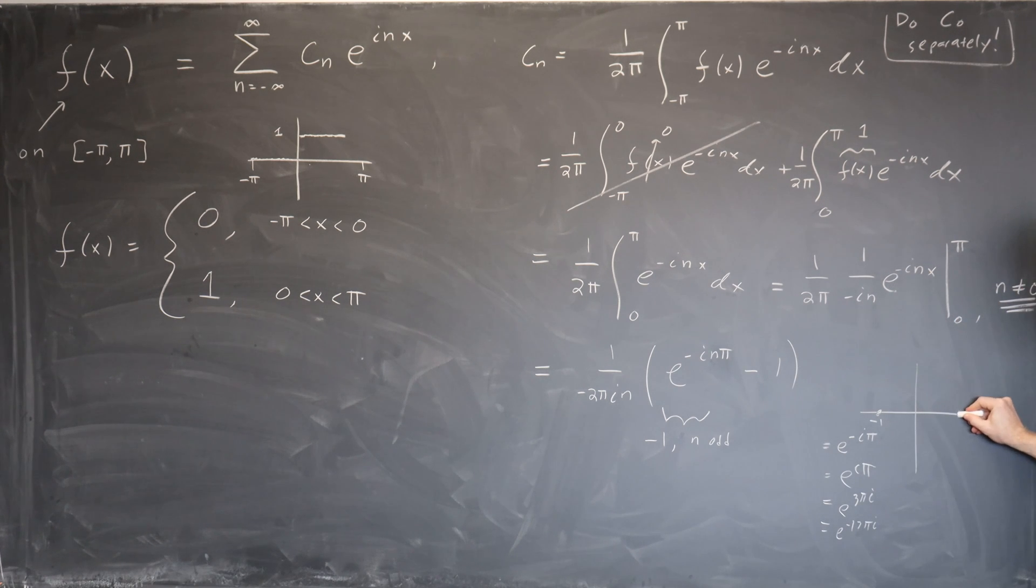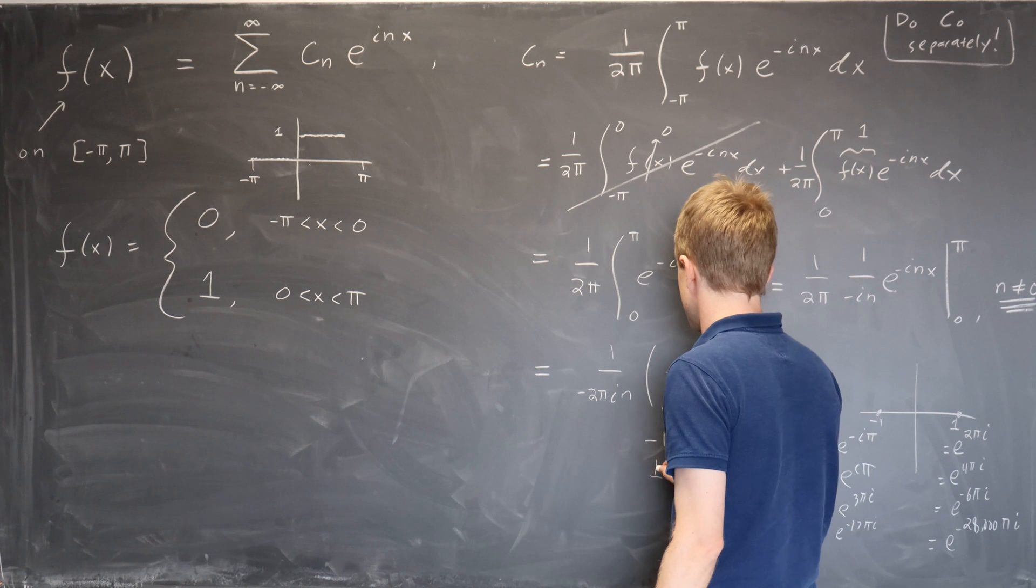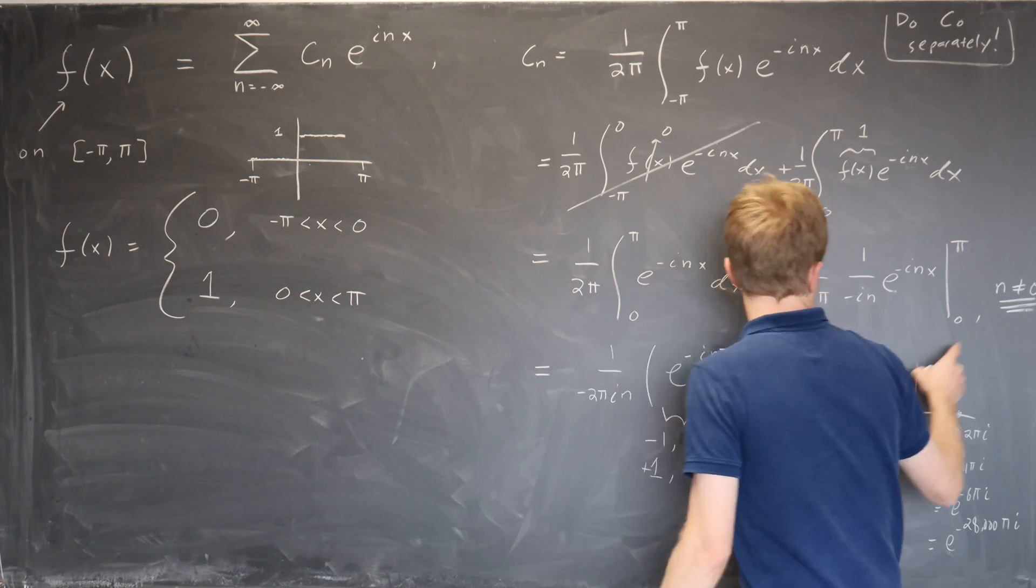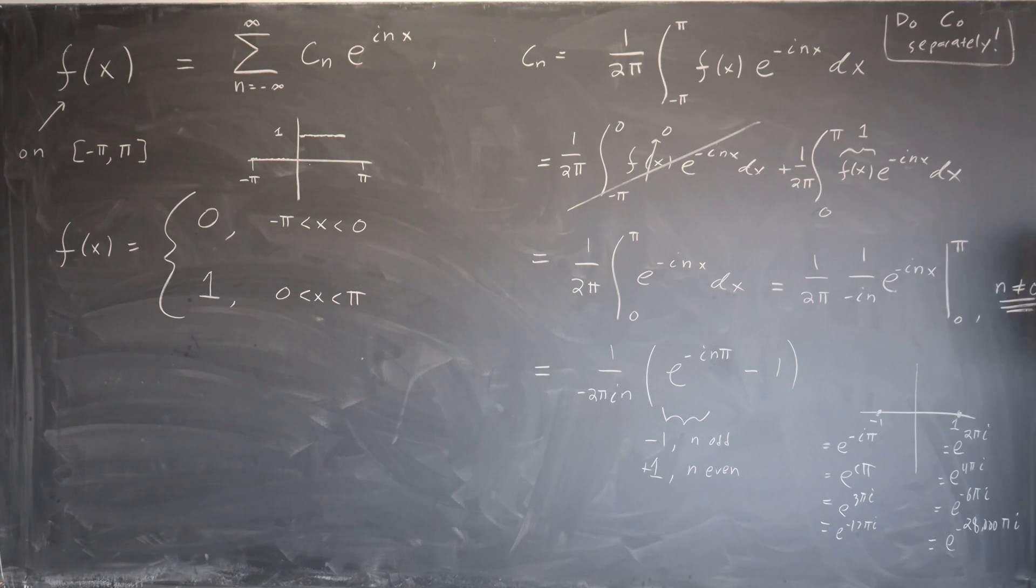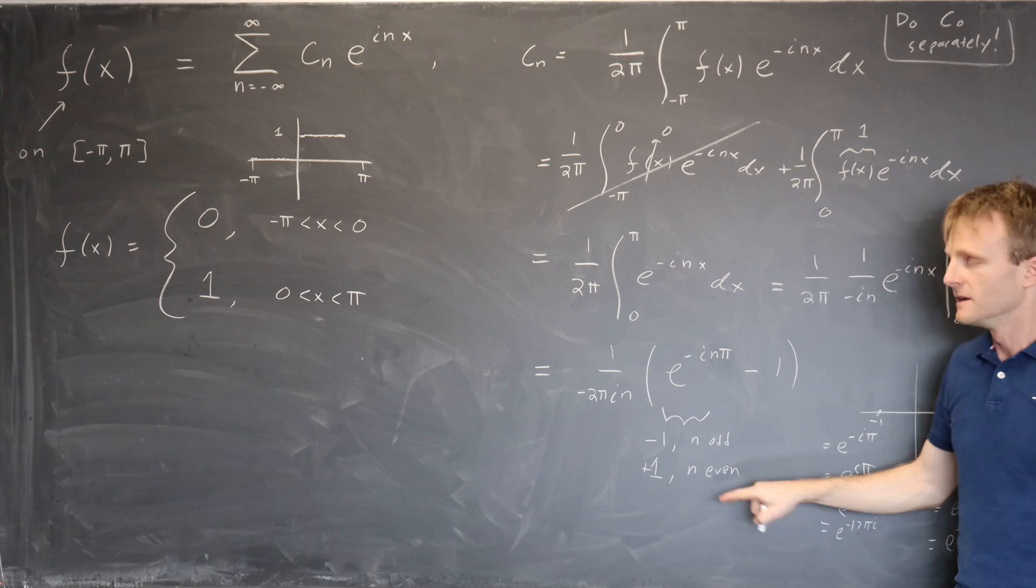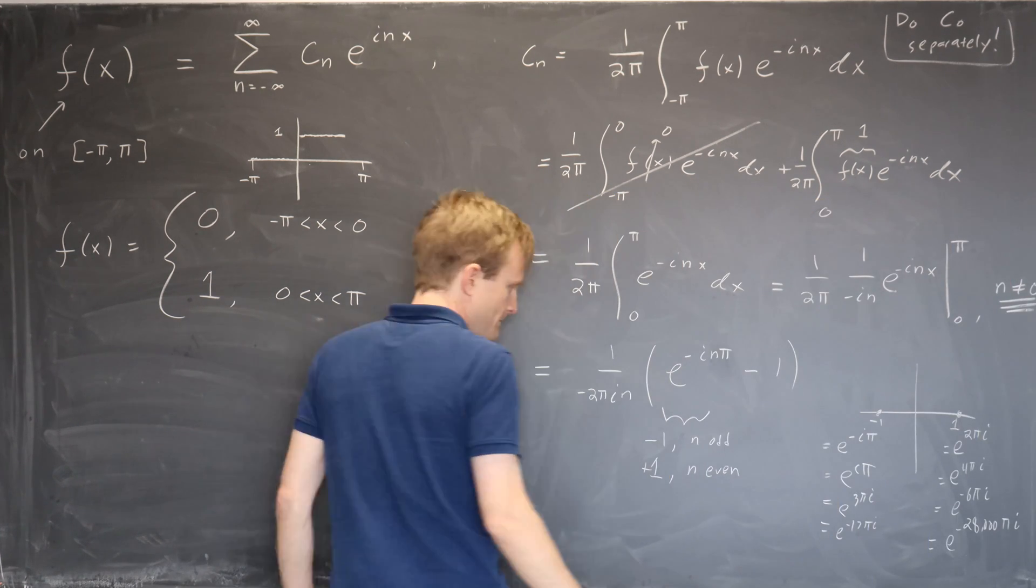What about if n is even? Well let's take n equals minus 2. So we get e to the 2 pi i. Well that's just this point, 1. Start here, you go around once. If it's 2 pi i, you come back to 1. 1 is also equal to e to the 4 pi i, e to the minus 6 pi i, e to the minus 1000 pi i. Any even number is always going to give you 1. So this thing is actually equal to plus 1 when n is even, but not 0. We excluded 0 already.